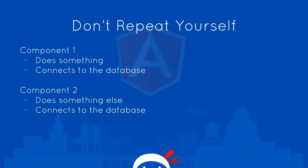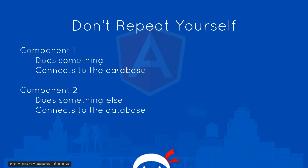You may have heard of the phrase 'don't repeat yourself' or DRY code when it comes to programming. That basically means don't duplicate your code where you don't have to, because it's just going to increase your workload. For example, say we have an application with two components. The first component connects to the database, and the second component also connects to the database with the same code. So we're repeating our code in two different places, which is bad practice because if we need to update it, we have to update in two or more places.